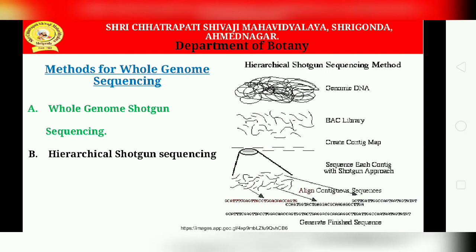In the map-first sequence-later, or clone-by-clone, or hierarchical shotgun sequencing strategy, large DNA segments are first cloned in BAC vectors. These BACs are then used for construction of a physical map. Such a map is called a physical map of the genome since the physical position of each clone on a chromosome is defined by order — unlike a genetic map where markers are placed based on recombination frequencies rather than physical distances.